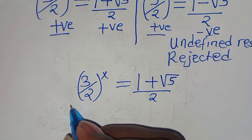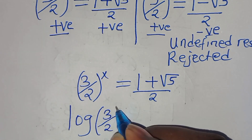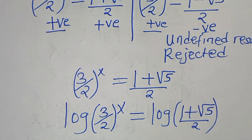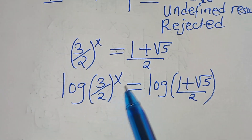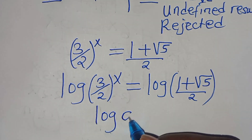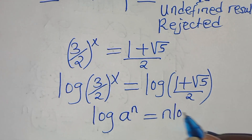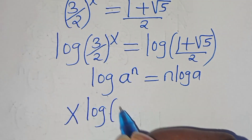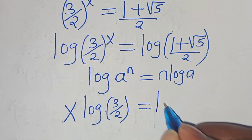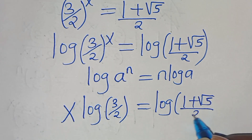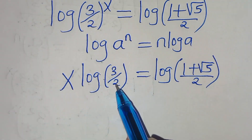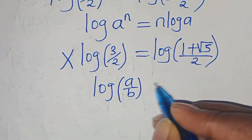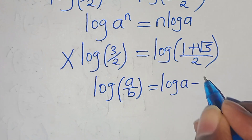To solve for x, we introduce logarithm on both sides: log of (3 over 2)^x equals log of (1 plus square root of 5) divided by 2. Using the power rule, log a^n = n·log a, we get x·log(3 over 2) equals log of (1 plus square root of 5) divided by 2. Both sides can be expanded using the log quotient rule, log(a/b) = log a minus log b.